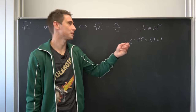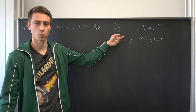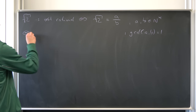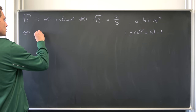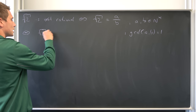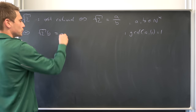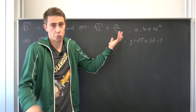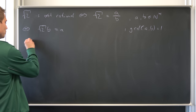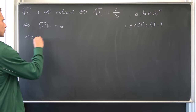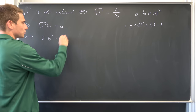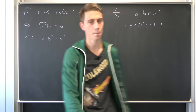Since b is not equal to zero, we can multiply both sides by b, so we have square root of two times b equal to a. And we can also square both sides — that's equivalent to saying we have two times b squared equal to a squared.